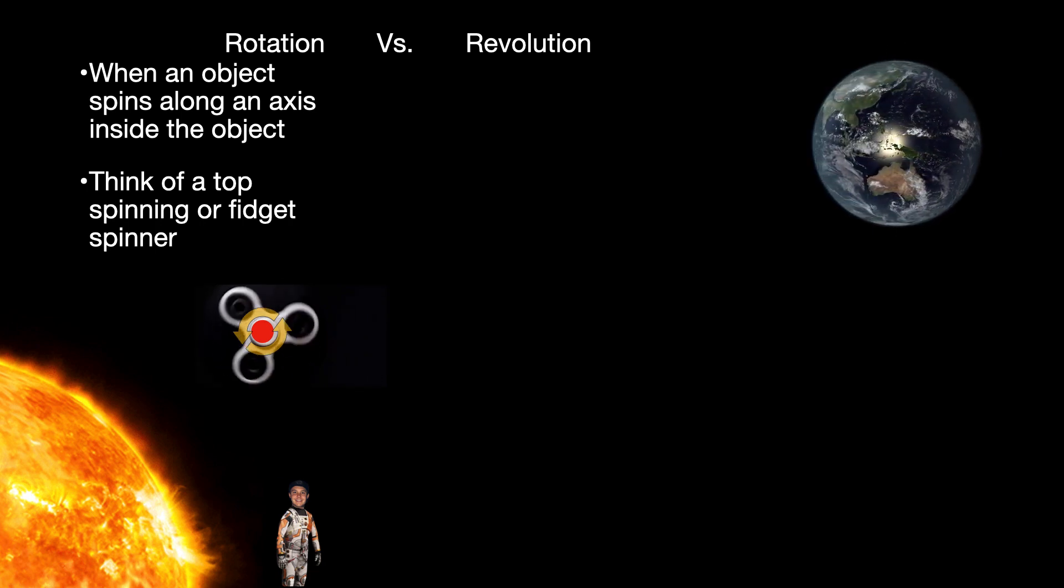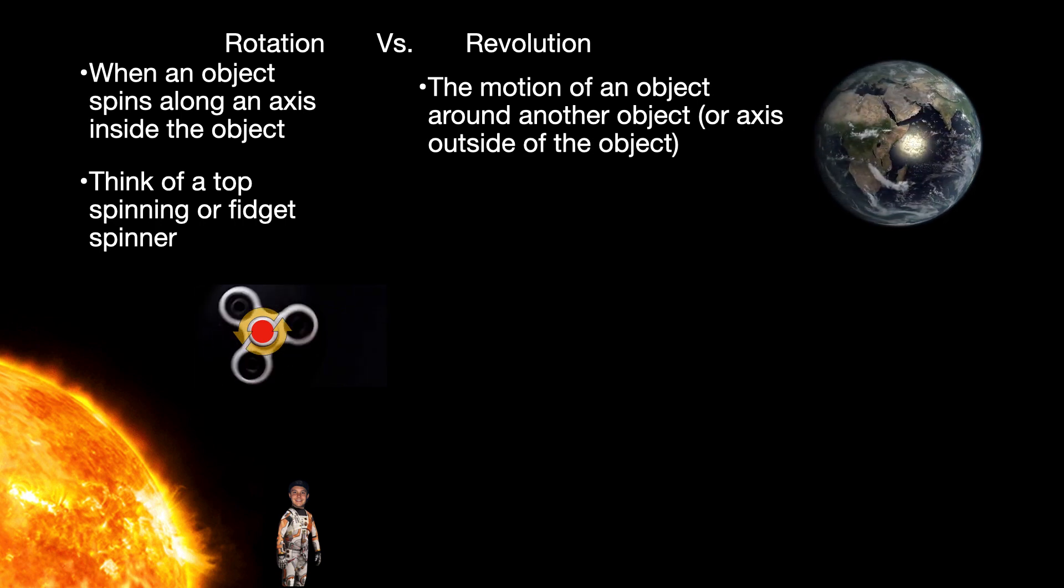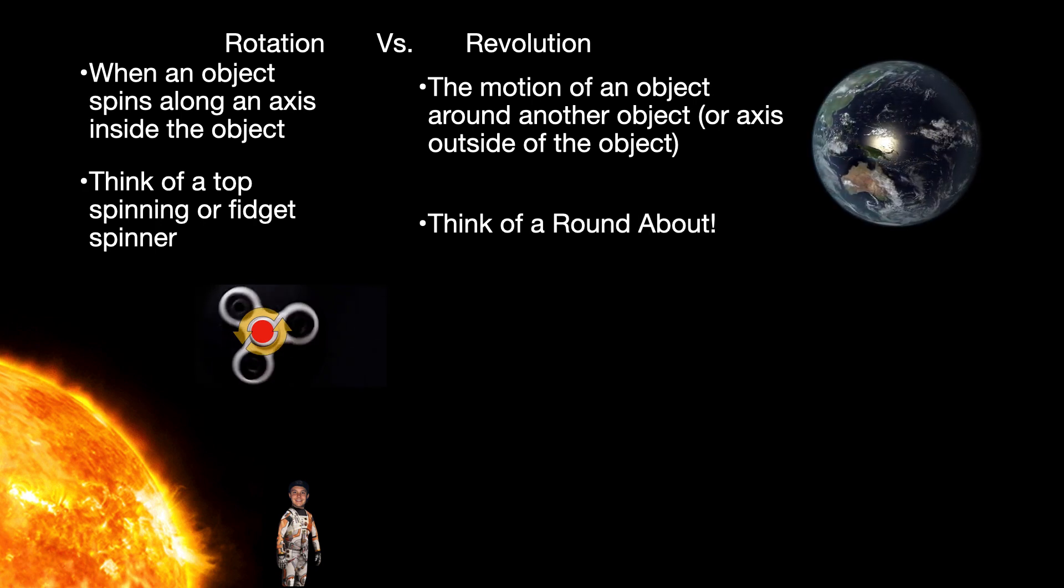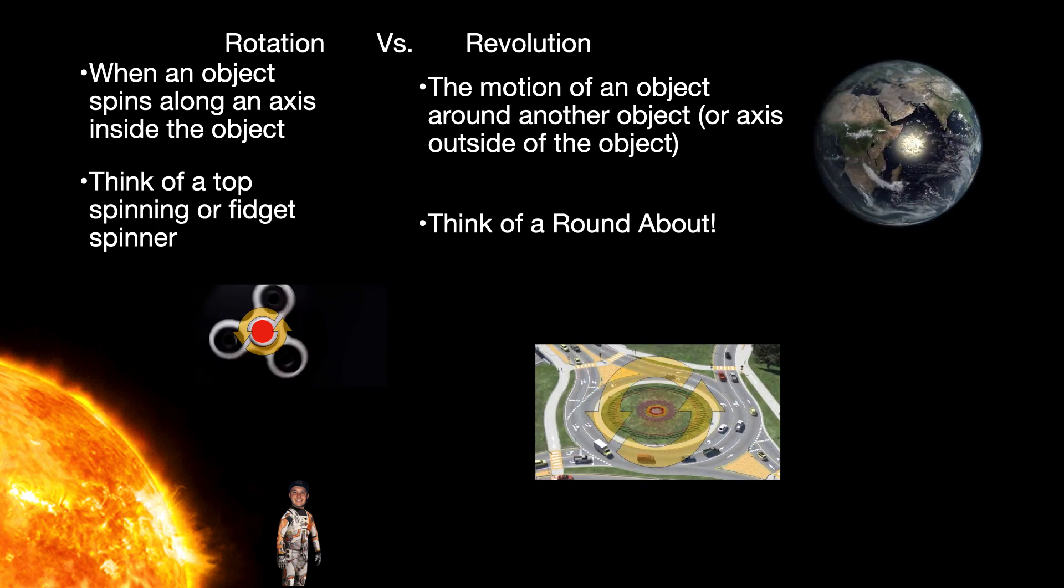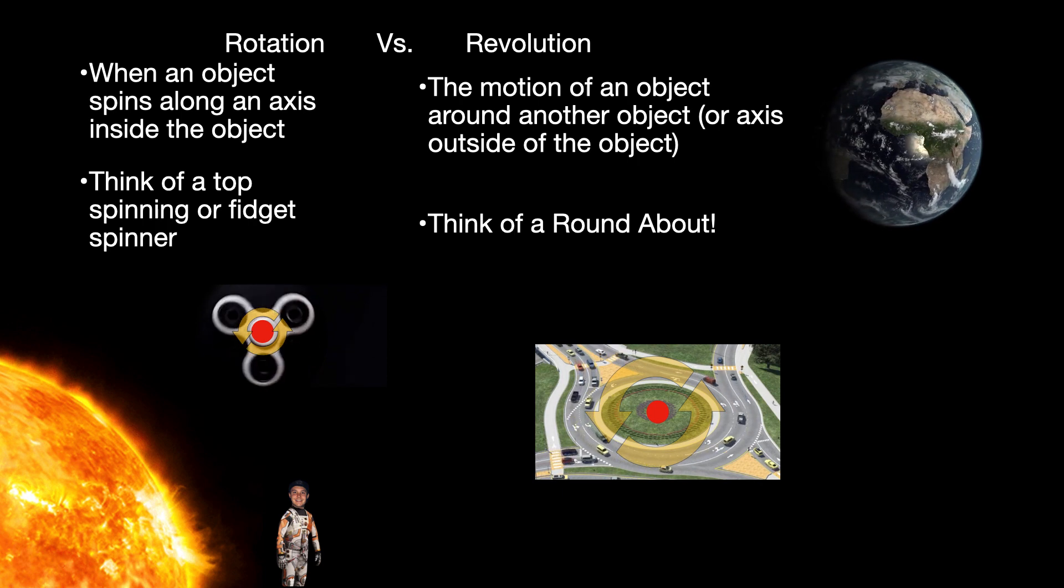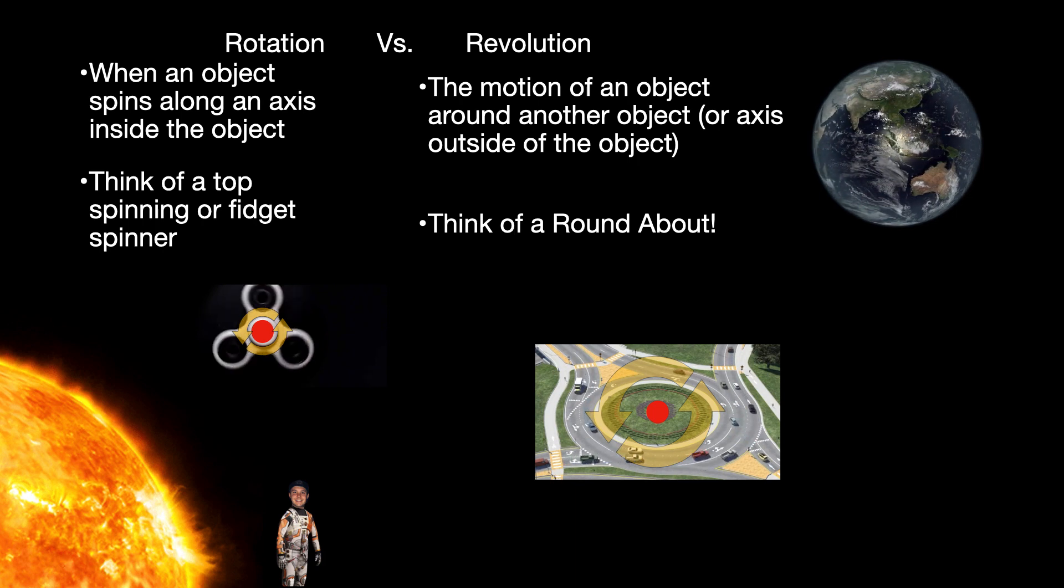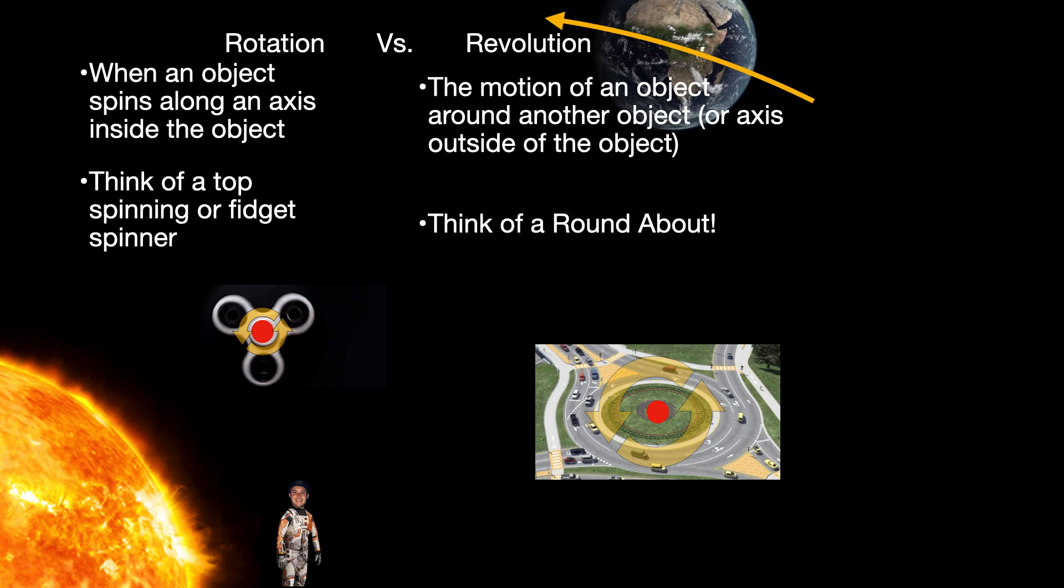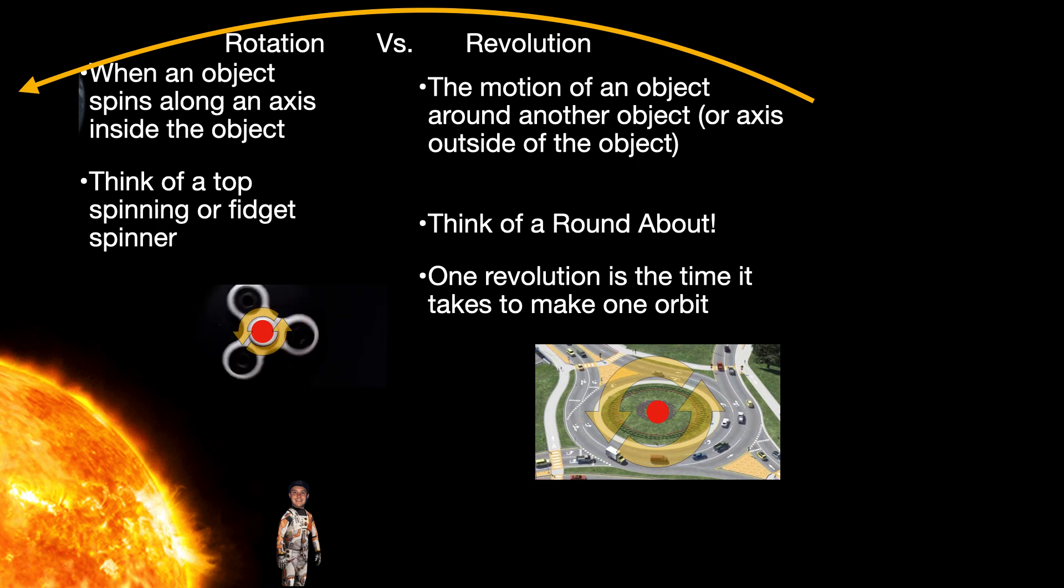Now, the other way that objects in space can move is called revolution, which is where an object will move around another object. In this case, you can sort of think of a roundabout. St. Cloud is filled with roundabouts, and we've probably all been through one. And when you're doing this, your car is revolving around the center of that roundabout. You're not spinning in that roundabout. You're revolving around the middle. Now, Earth does this also. It will revolve around the sun, which means it basically makes a lap around the sun, and it takes time for this to happen, which we call one orbit.